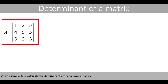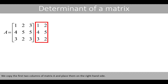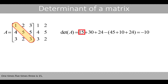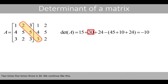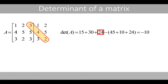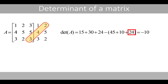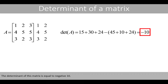As an example let's calculate the determinant of the following matrix. We copy the first two columns of matrix A and place them on the right-hand side. 1 times 5 times 3 is 15, and 2 times 5 times 3 is 30. We continue like this, and the determinant of this matrix is equal to negative 10.